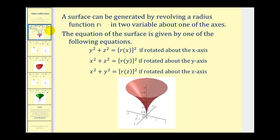A surface can be generated by revolving a radius function r in two variables about one of the axes. The equation of the surface is given by one of the following equations based upon which axis the function is rotated about. We have y² + z² = r(x)² if rotated about the x-axis, x² + z² = r(y)² if rotated about the y-axis, and x² + y² = r(z)² if rotated about the z-axis.